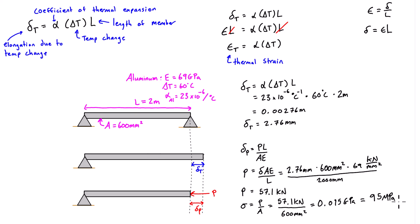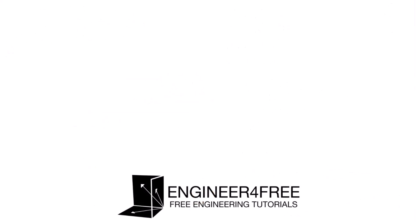So in reality, because this member is constrained by the reactions, it's not actually able to expand. We get a thermal stress of 95 MPa developing internally without any actual elongation or strain occurring.